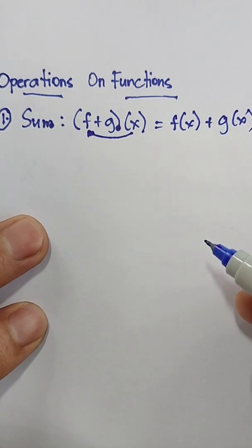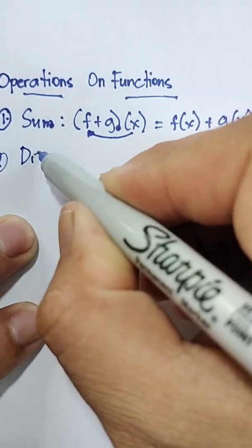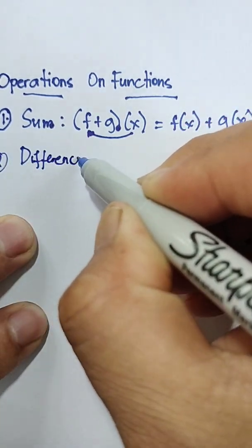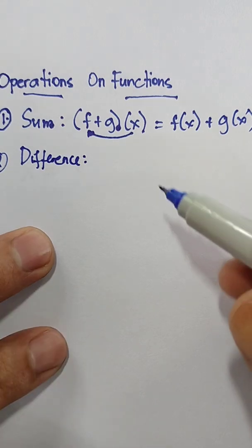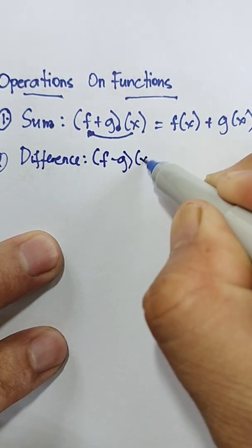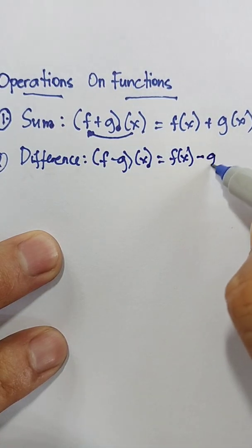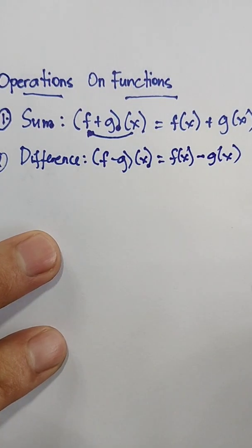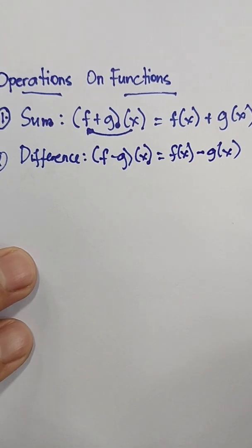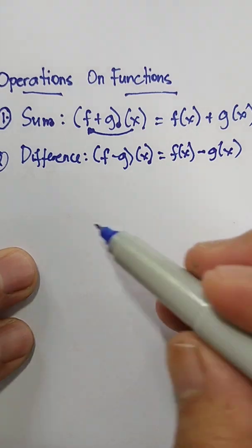Number two, we have difference. What is the formula in finding the difference? That is the quantity of f minus g times x equals f of x minus g of x. That is the formula in finding the sum and difference of functions.